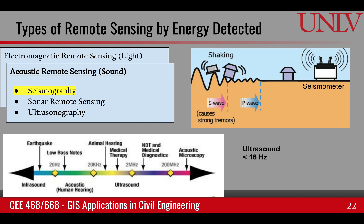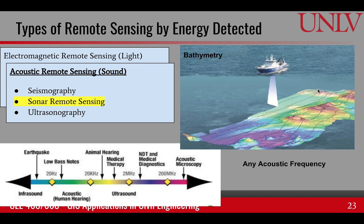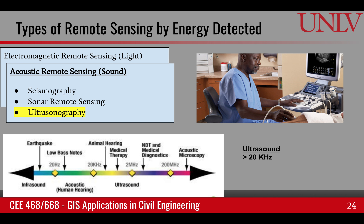The green regions of the microwave spectrum are where most radar frequencies used in microwave remote sensing exist. The other type of remote sensing is based upon sound — called acoustic remote sensing — and this is primarily used in seismography, sonar remote sensing, and ultrasonography. Seismography involves large infrasonic waves generated by earthquakes that travel through the earth and are detected by seismometers. Sonar remote sensing is primarily used for mapping underwater and subterranean land features.